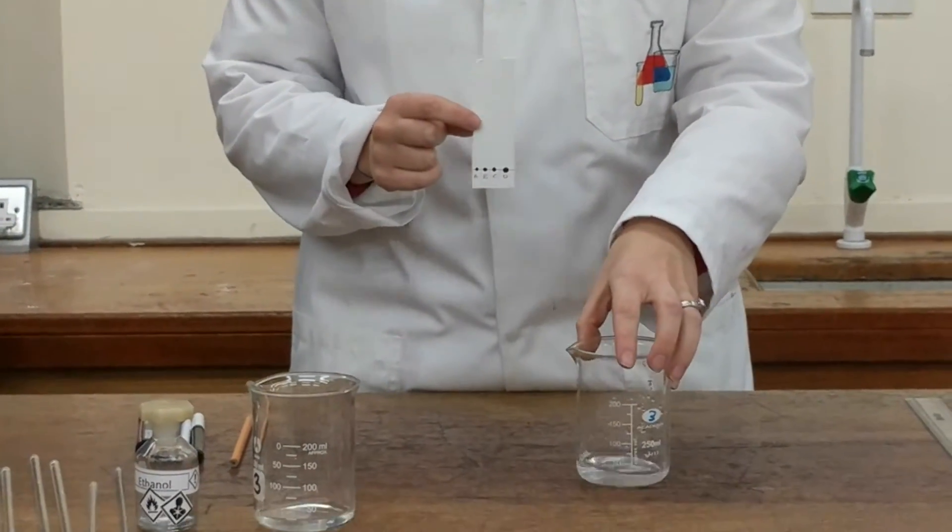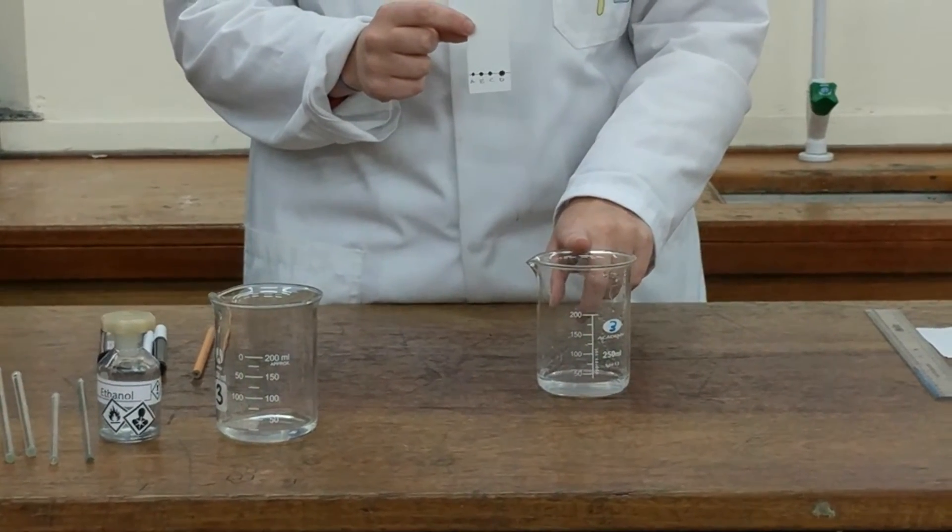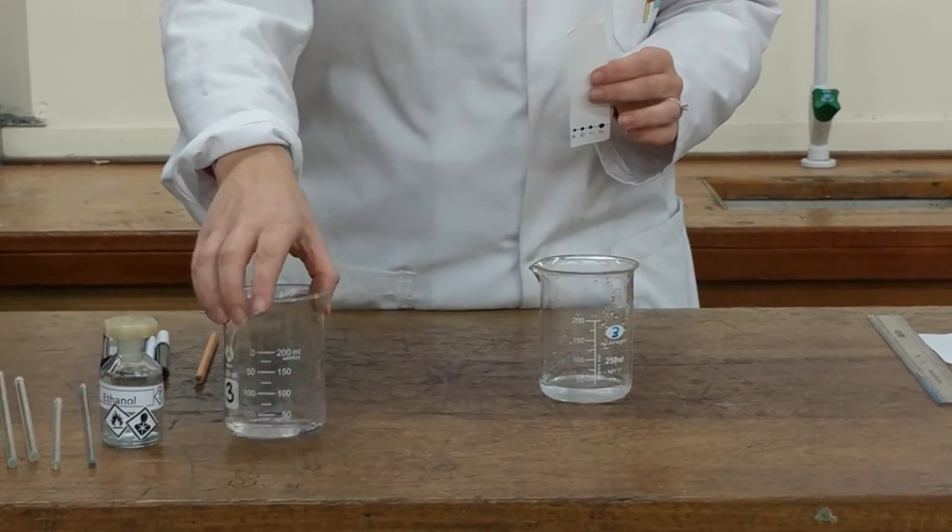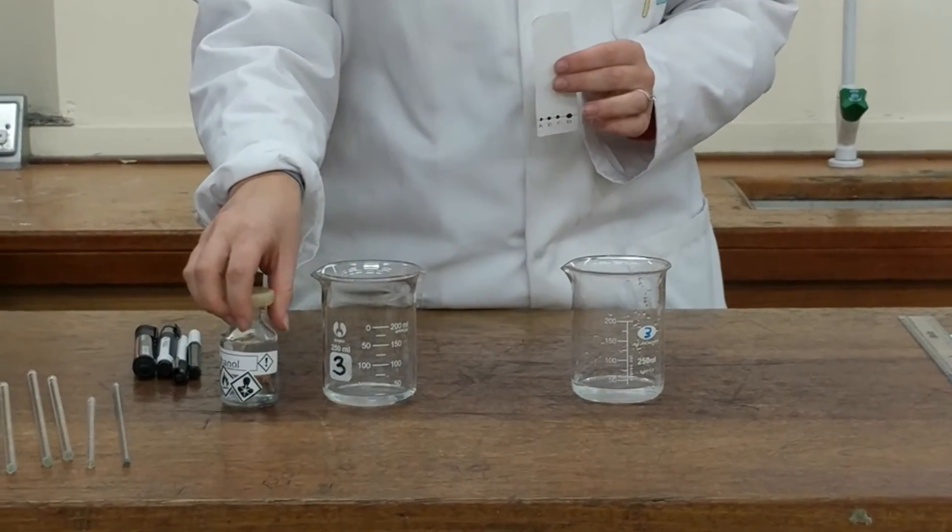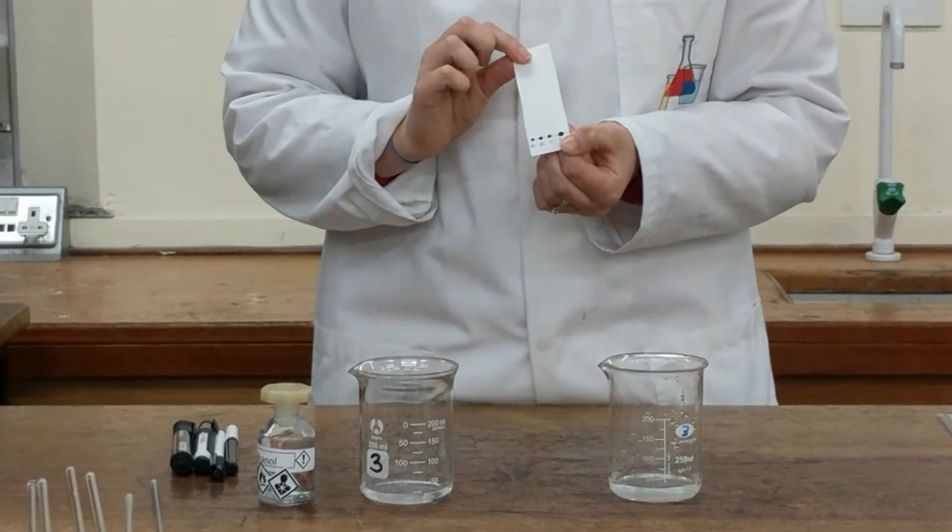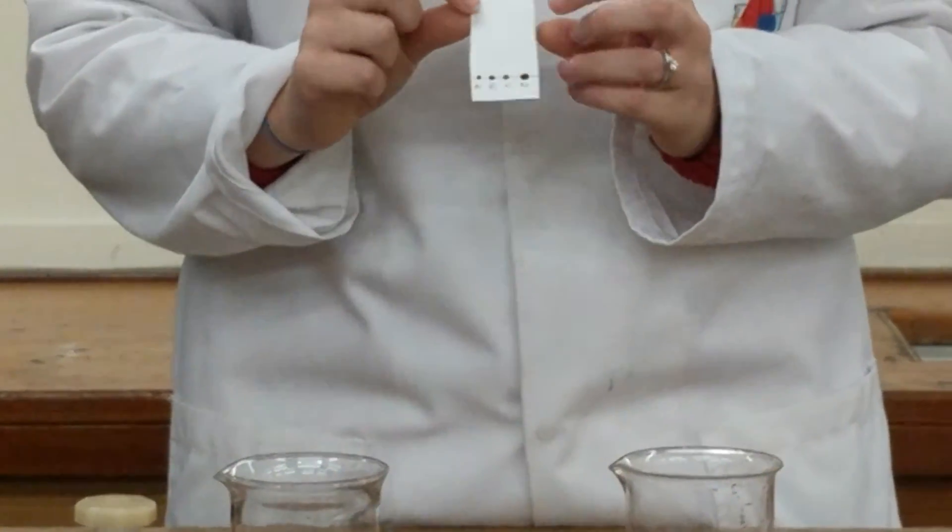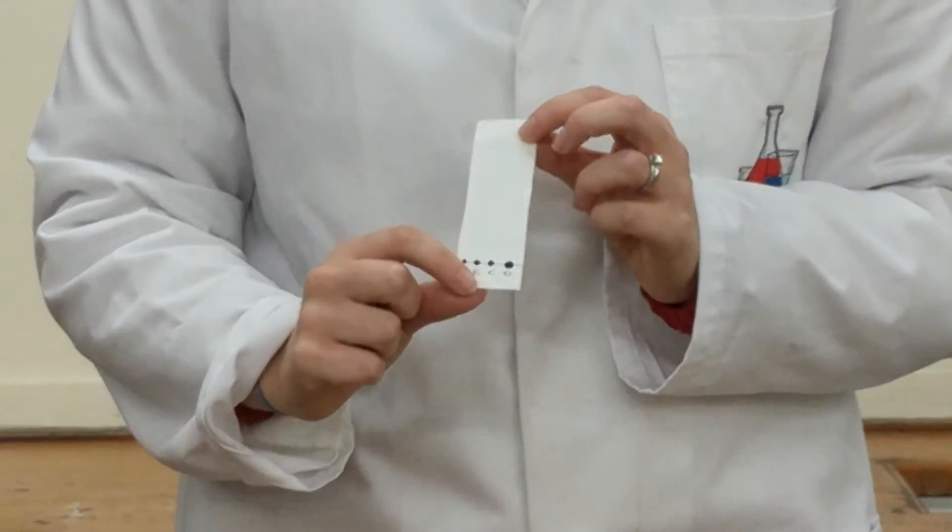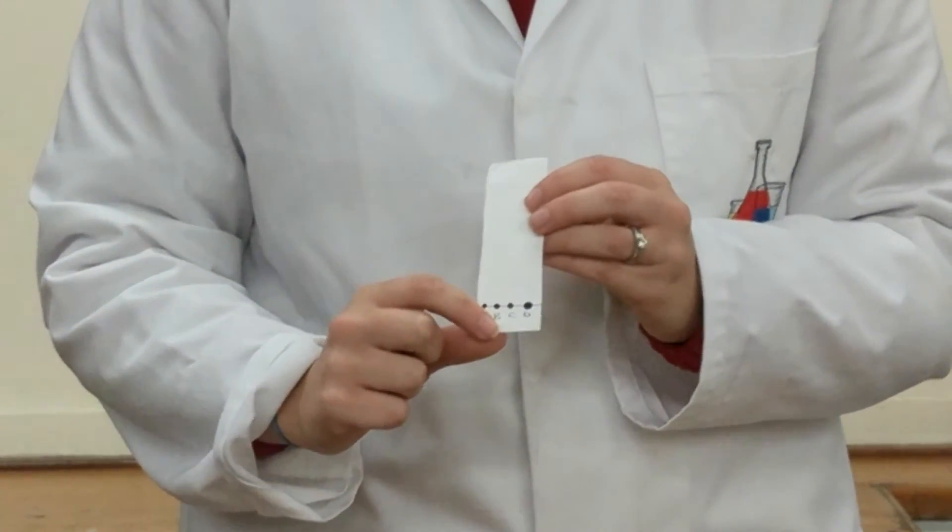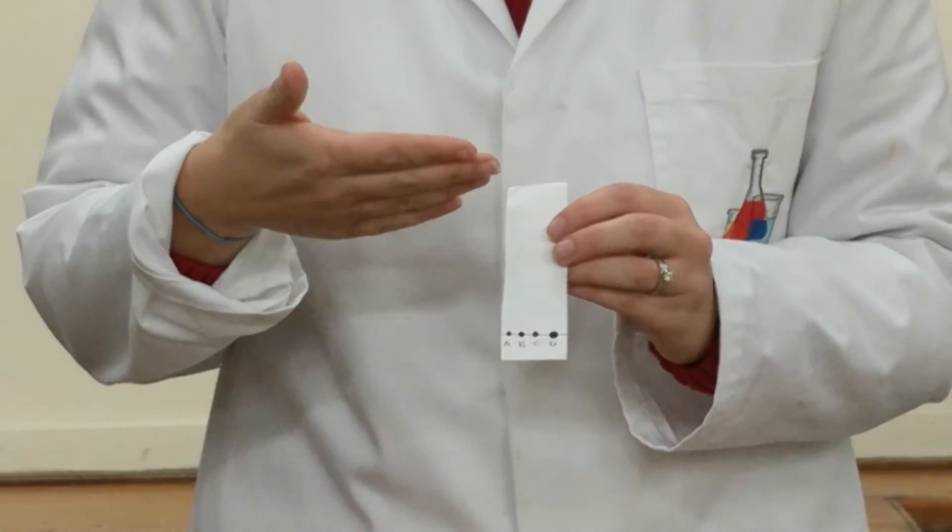So in this beaker here we've got water, which is going to be our solvent, and in this beaker here we've got ethanol, which is a different solvent that you can use. The stationary phase, stationary because it's not moving in the normal sense of the word stationary, is the paper. The mobile phase is the solvent that's actually going to be moving, mobile moving up the paper.